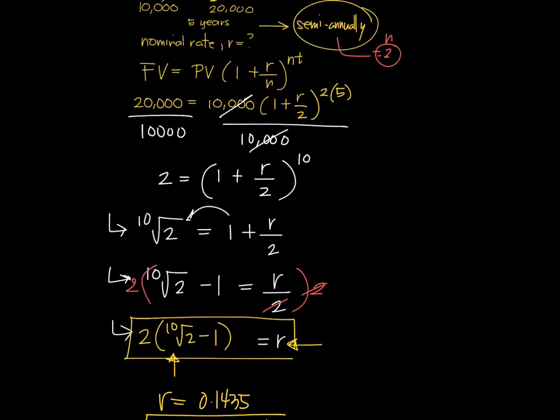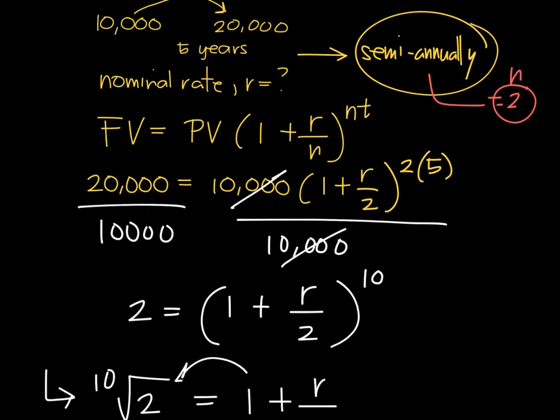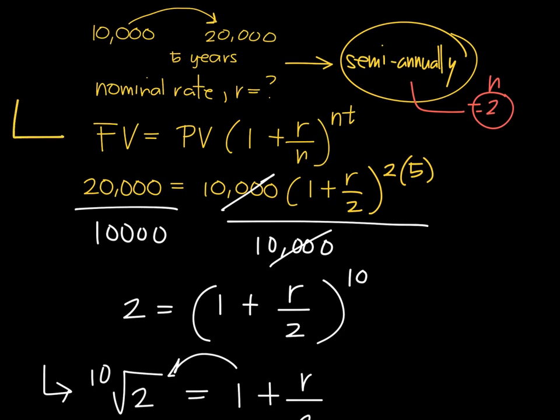The key in finding the nominal rate is to start with the formula and place the corresponding values properly. If it's FV, place the future value; if it's PV, place the present value. You should know how many times it's compounded and the number of years.